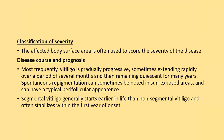Vitiligo has an unpredictable course — gradually progressive, sometimes expanding rapidly over several months then remaining static for years. Spontaneous repigmentation can sometimes be noted in sun-exposed areas with a typical perifollicular appearance. Some individuals develop vitiligo that involves the whole body over a few years, while others have one or two persistent unchanged patches — called stable vitiligo. Segmental vitiligo generally starts earlier in life and often stabilizes within the first year of onset.